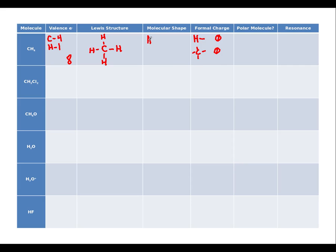So got a shape of AX4 which is also referred to as tetrahedral. Is this polar? No. Since it's AX4 and all those hydrogens are coming off that central carbon we're gonna have all that symmetry there. It's gonna cancel that out and also for resonance it's a no because there's no double bond or electrons that would move around.